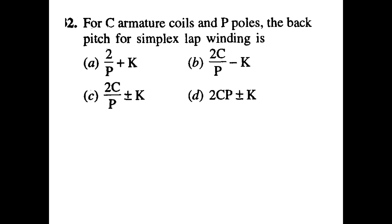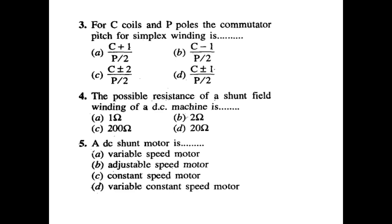Second question: For C armature coils and P poles, the back pitch for simplex lap winding. Options: 2/P + K; 2C/P - K; 2C/P ± K. The answer is option B: 2C/P - K. Here, P is the number of poles.